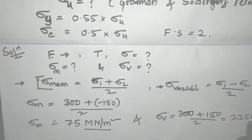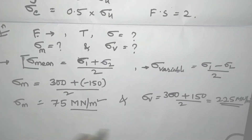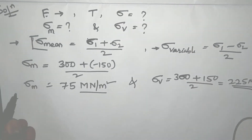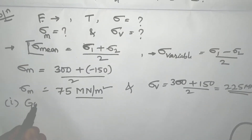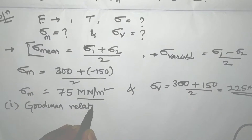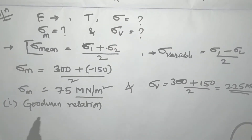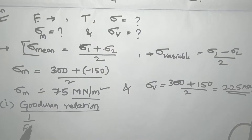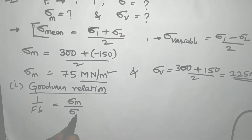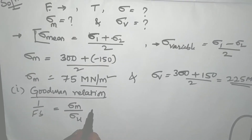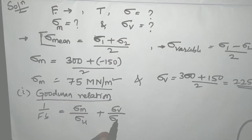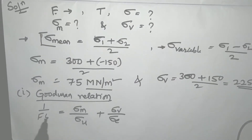We have obtained Sigma_M and Sigma_V. Now I will go to the first method, using the Goodman relationship. In the Goodman relationship, the equation is: one divided by factor of safety equals Sigma_M divided by Sigma_U plus Sigma_V divided by Sigma_E.